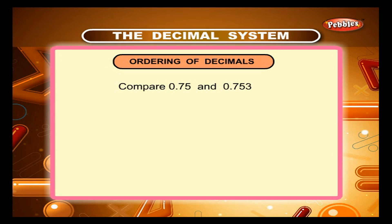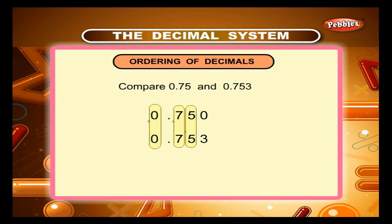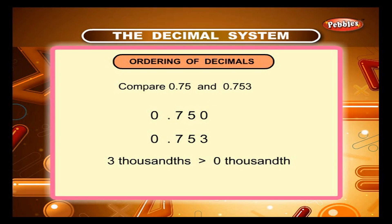Sum 3. Compare 0.75 and 0.753. Here the whole number portion and the digits in the tenths and hundredths places are the same. The digit in the thousandths place in 0.75 is 0 — recall that 0.75 can be written as 0.750. Since 3 thousandths is greater than 0 thousandths, 0.753 is greater than 0.75.